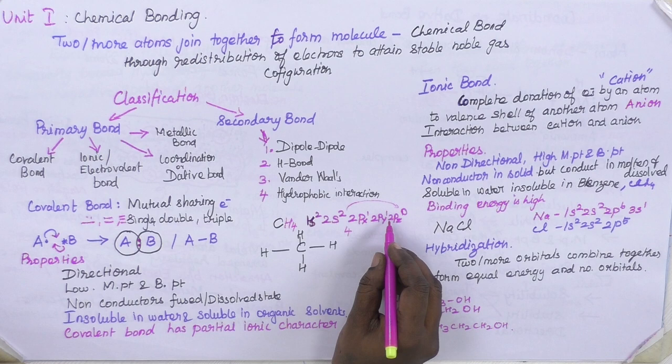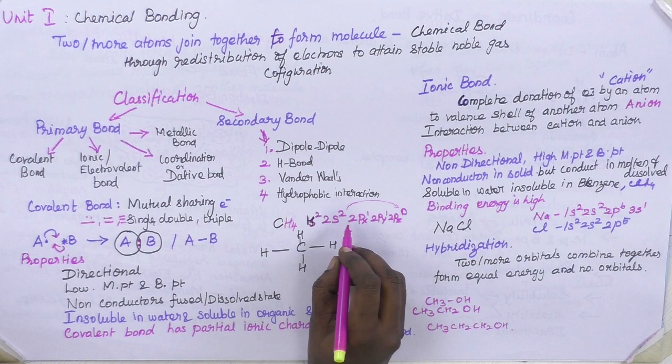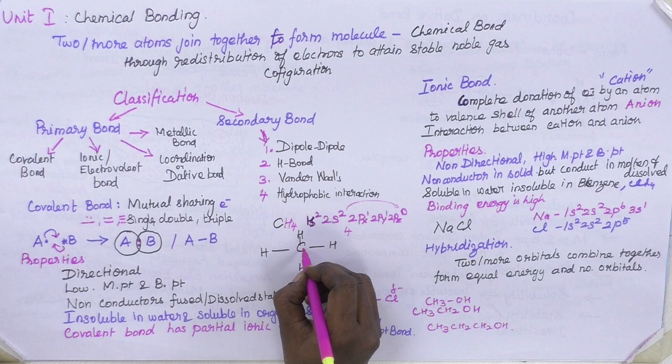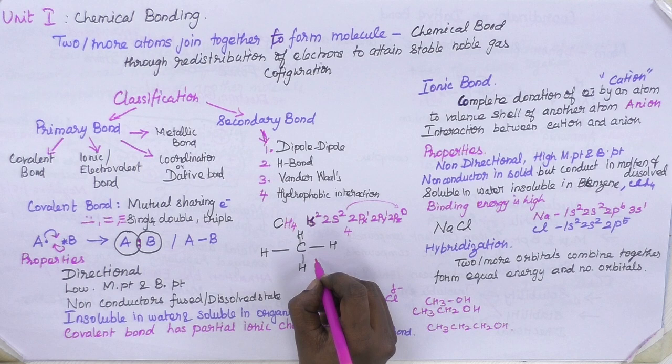So all four orbitals of carbon are half-filled, and each needs one electron to completely fill. Hydrogen has one electron each, so each hydrogen donates one electron to carbon and forms four bonds. This is an example of a covalent bond.